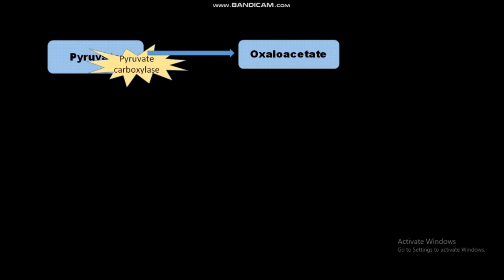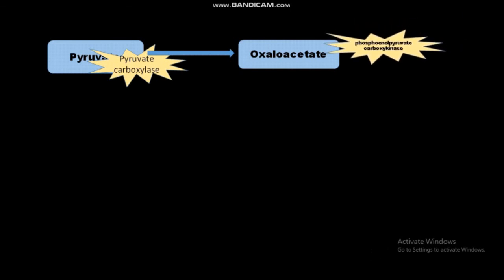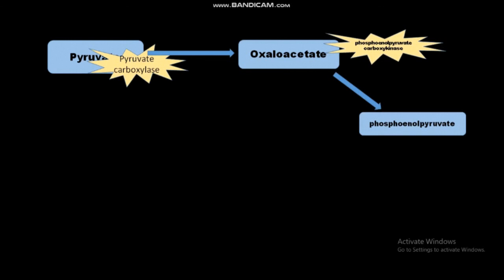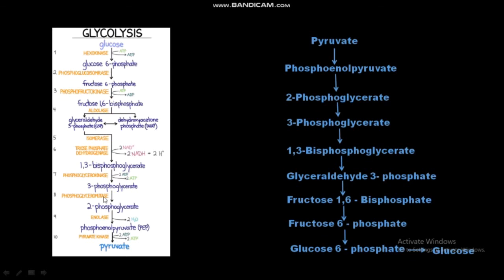In the cytoplasm, phosphoenolpyruvate carboxykinase (PEPCK) acts on the oxaloacetate and converts it into phosphoenolpyruvate (PEP). In this way, pyruvate is reversed into phosphoenolpyruvate. Phosphoenolpyruvate is then converted into 2-phosphoglycerate by enolase — the same enzyme present in the glycolysis pathway — working in reverse.